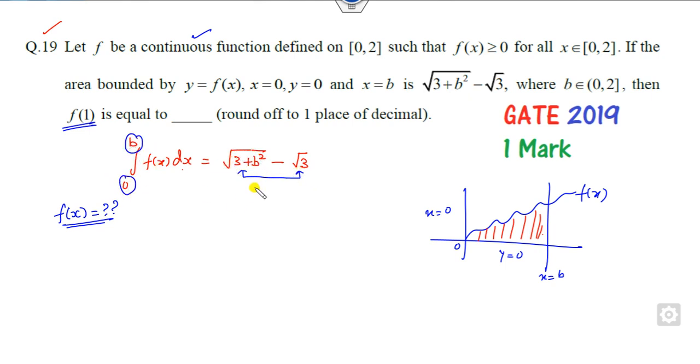You have to correlate this with respect to the limit. Can I say this function, whatever the integration of this is, apart from the limits - since b is the limit, I can write it here as √3 + b². I can also write this as √3 + 0², that's the same thing.